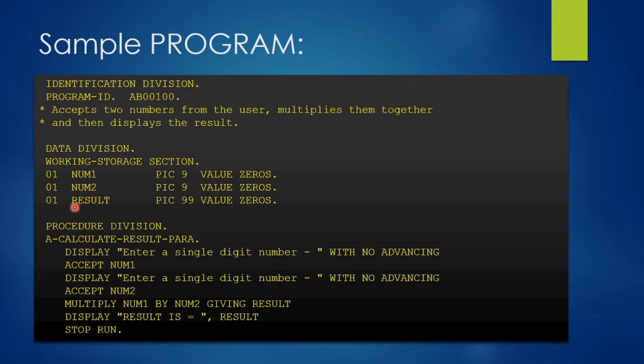After declaring your variables, we will write procedure division. After procedure division, we have coded paragraph name. Make sure that paragraph name will give an idea about the processing it is going to do.